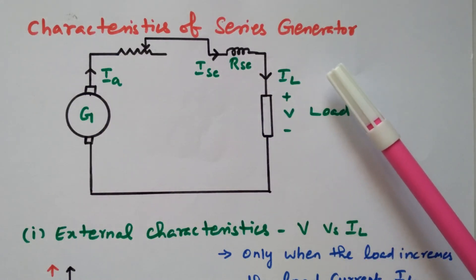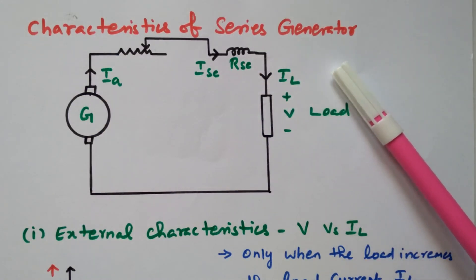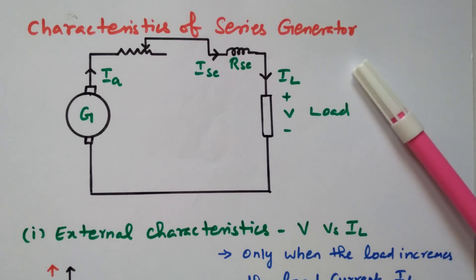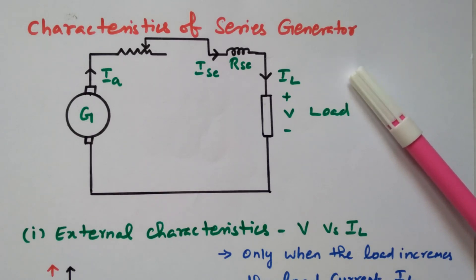We know that in DC generator there are majorly two types available: one is self-excited generator and separately excited DC generator. Separately excited means the field is excited separately. Self-excited means the field is excited in the generator itself.